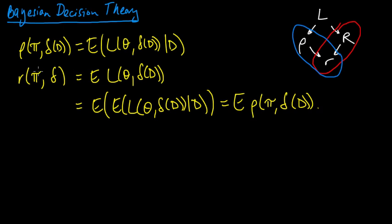When we were talking about the Bayesian approach, we talked about two cases. In the first case, if you knew the data you were going to be evaluated on, you would choose the action delta of d that minimizes this posterior expected loss under the posterior distribution given the data. The other case was if we didn't know what data we were going to have to choose an action for — then we wanted to minimize the Bayes risk. And this suggests that to minimize the Bayes risk, we should choose delta of d to minimize the Bayesian expected loss for each d.